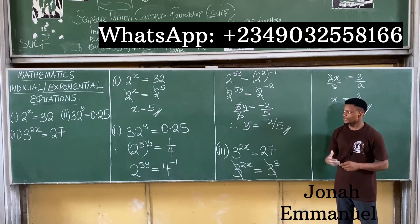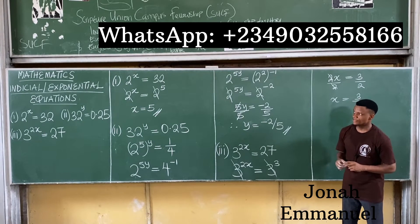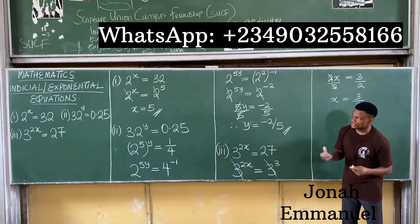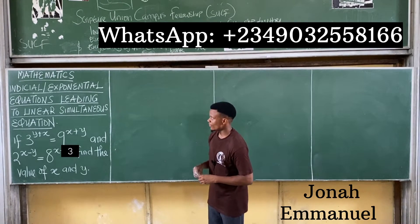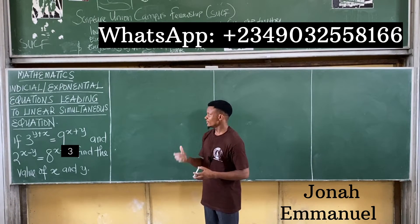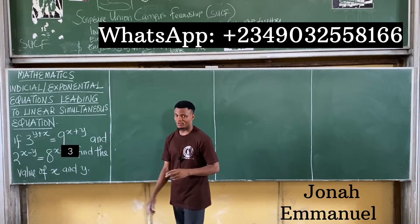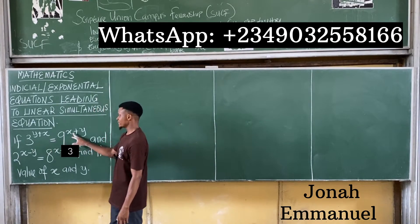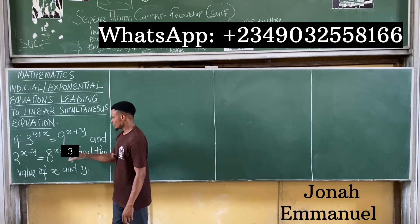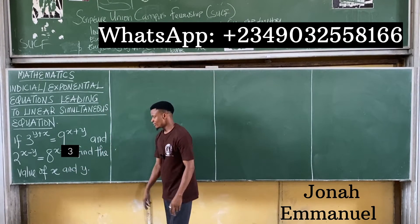Let's look at the next concept: solving indicial or exponential equations leading to linear and simultaneous equations. It says: if 3 to the power x plus y is equal to 9 to the power x plus y, and 2 to the power x minus y is equal to 8 to the power x minus y, find the value of x and y.